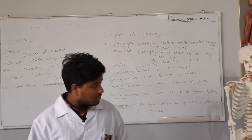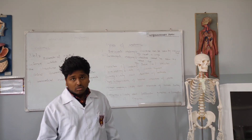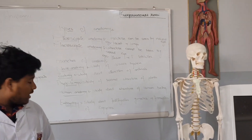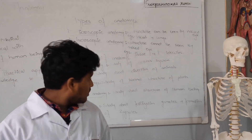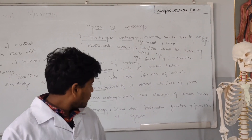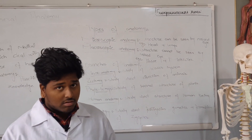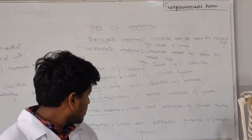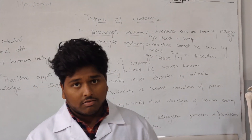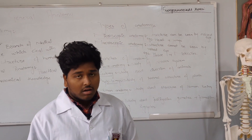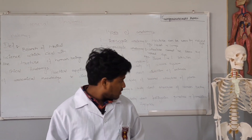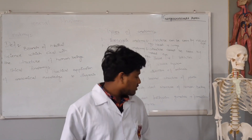The branches of anatomy include: urinotomy, zootomy (the study of dissection of animals), phytotomy (the study of internal structure of plants), human anatomy (the study of human beings), embryology (the study from fertilization through formation of the zygote), and neuroanatomy (the study of the nervous system).